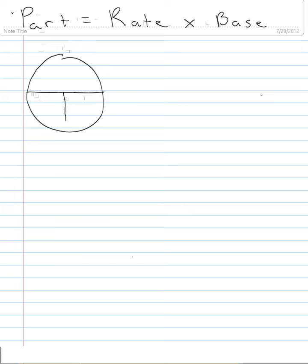So if we draw a little circle, I'm going to put a P here and an R and a B here. So if I cover over the P,